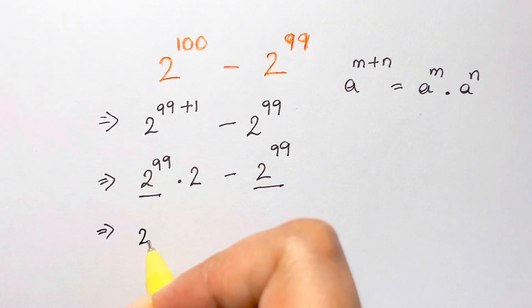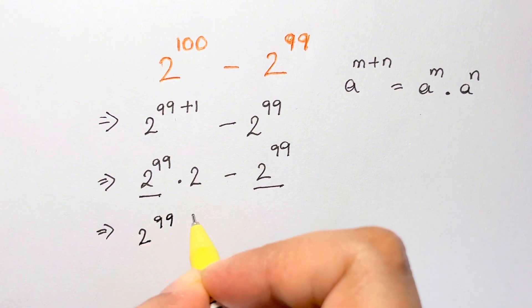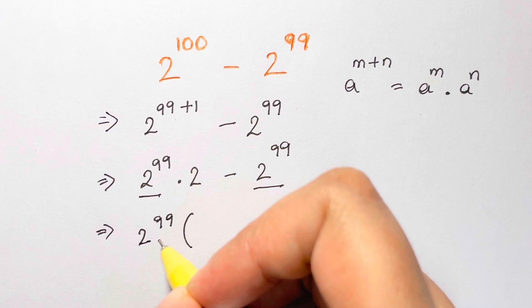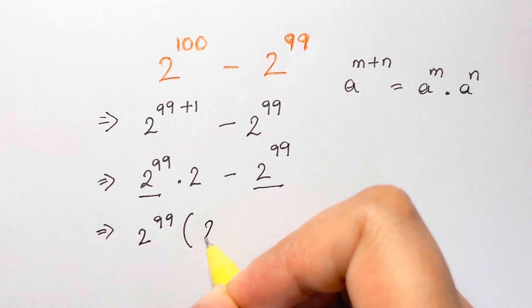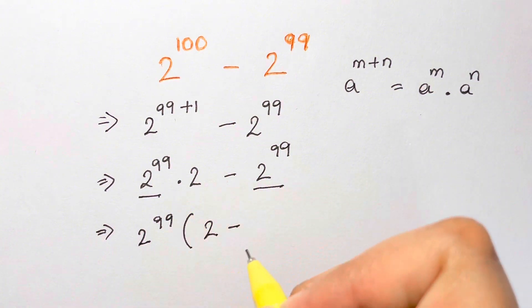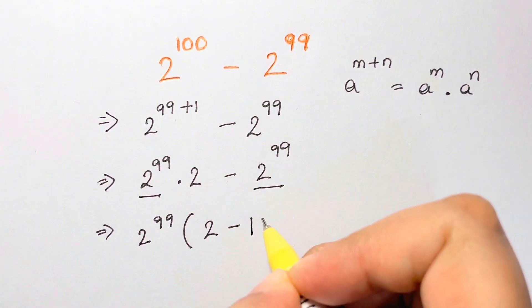So 2 to the power of 99, when it comes outside, you are left with, when you divide 2 to the power of 99 by the same thing, you are left with 2 here. 2 minus, now divide 2 to the power of 99 by 2 to the power of 99, you get 1.